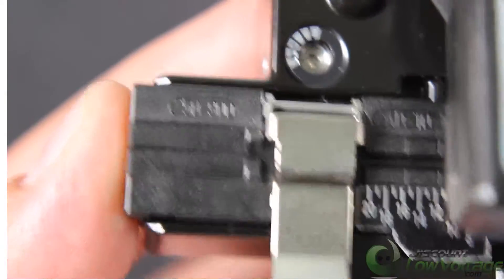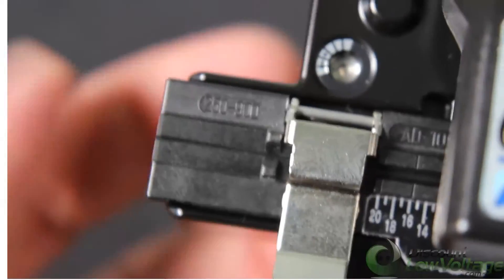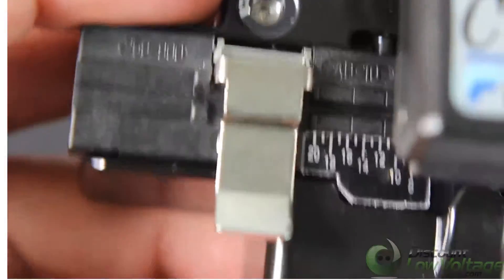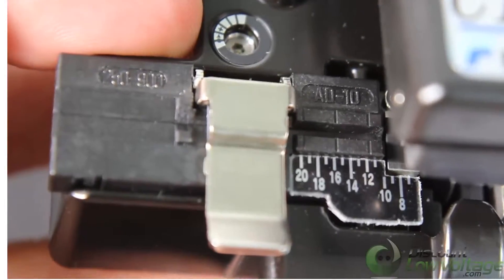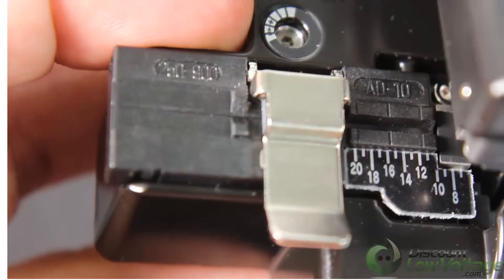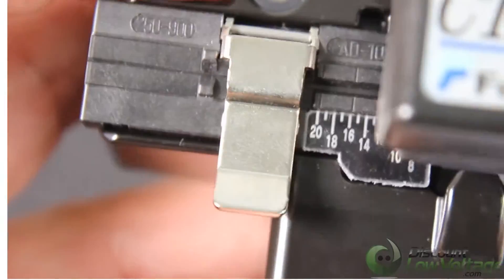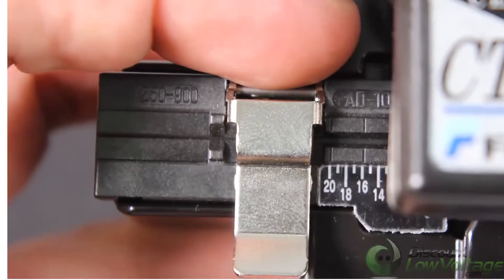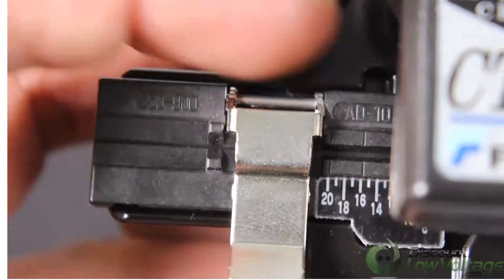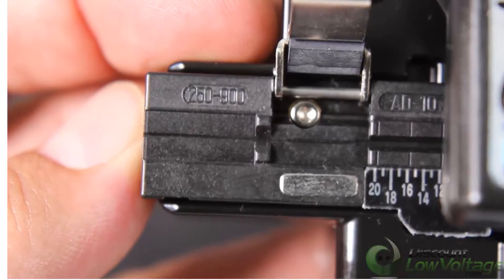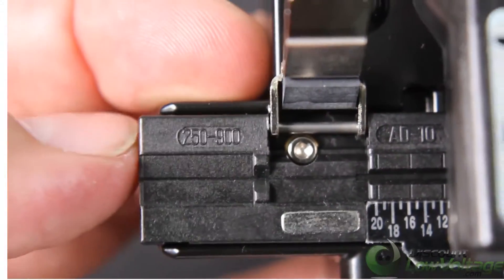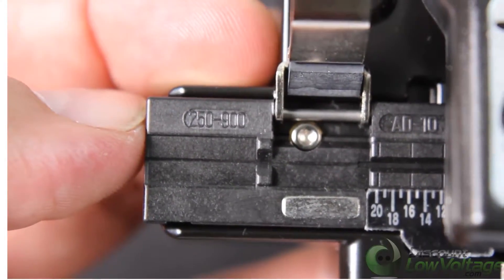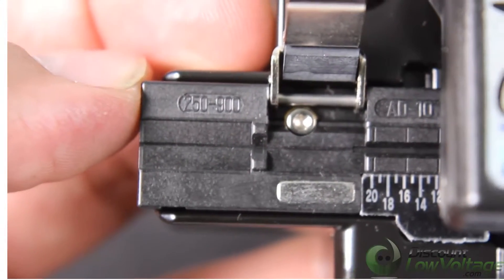As you can tell, it has your numbers there to go ahead and measure your proper cleave length. This is the AD10 - you'll notice the part number right there, AD10. That is the model of this fiber holder and it's for the 250 and 900 size fiber, so pretty much tight buffered and loose tube.